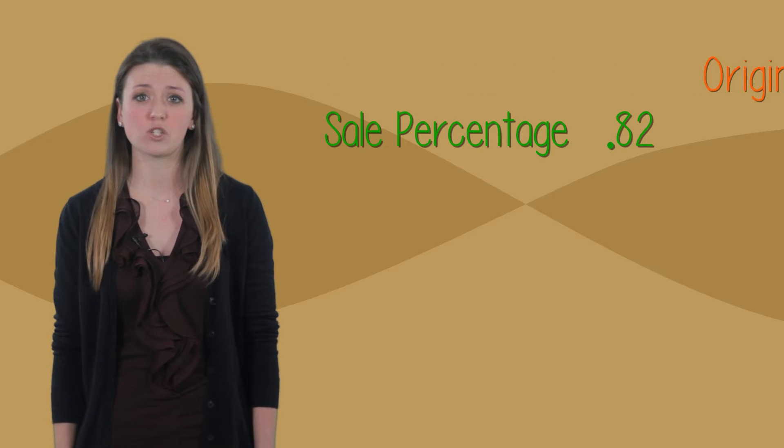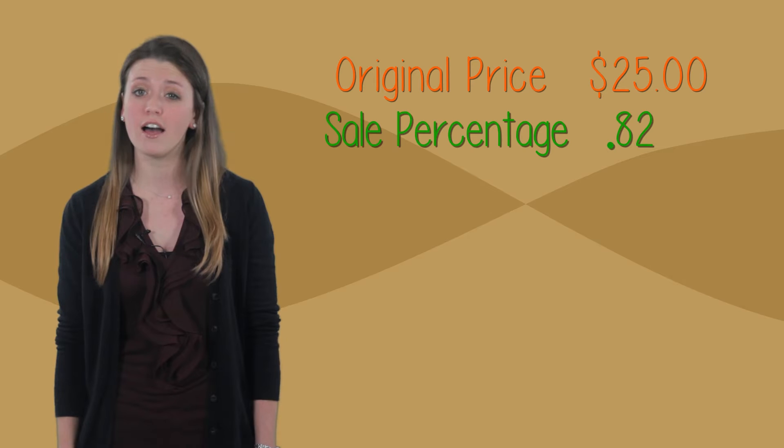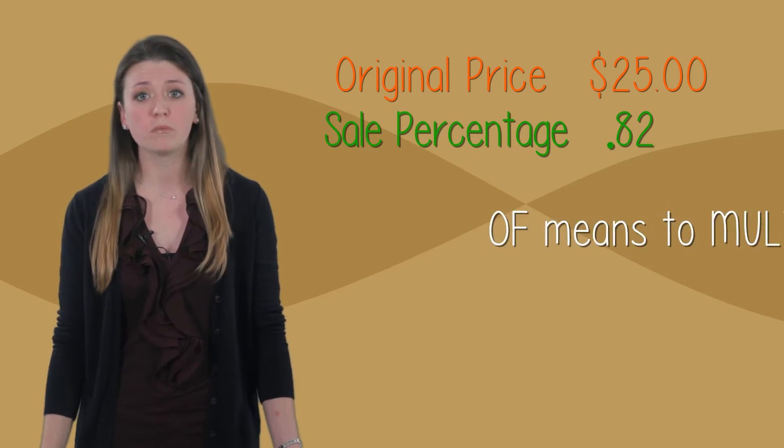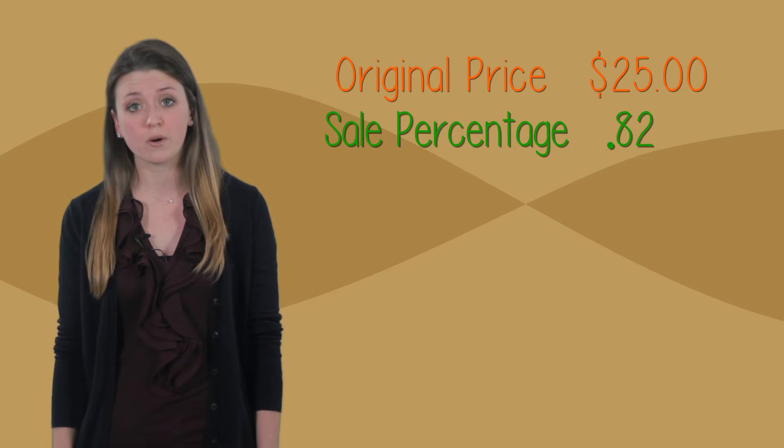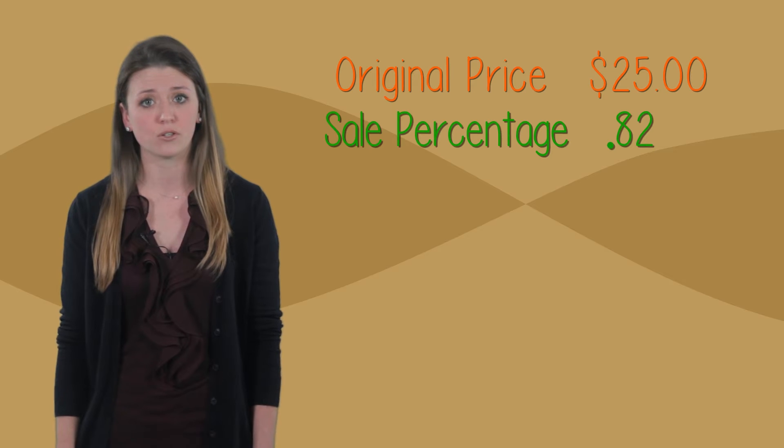The original price is $25. Since we are finding the percent we're paying of the original price, remember that 'of' means to multiply. So we will multiply our original price, $25, by the percent we are paying as a decimal, 82 hundredths.